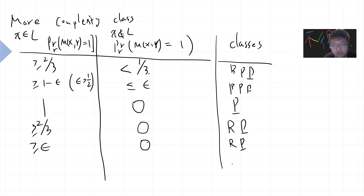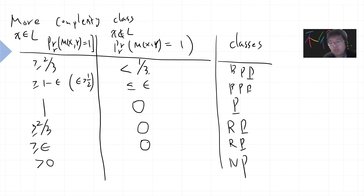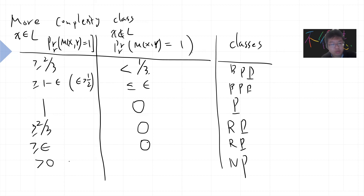There is a class called RP: the probability outputs one is greater or equal to two-thirds when x is in L, and zero when x is not in L. For NP, this is greater than zero — for example in 3-SAT with only one satisfying assignment, you get probability one over 2^n, which is still greater than zero.